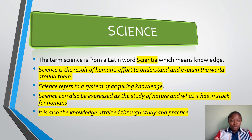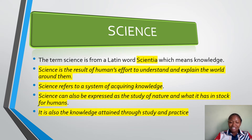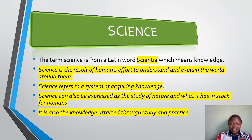Science is also the knowledge attained through study and practice. The knowledge you obtain through studies and practice is science. Any of these four explanations is accepted — we have a whole lot of them, but we are taking those four.